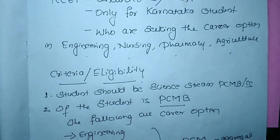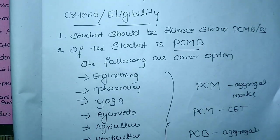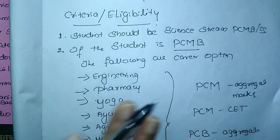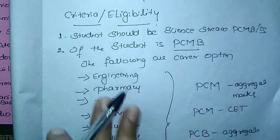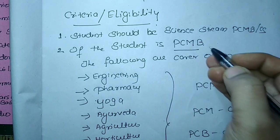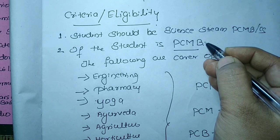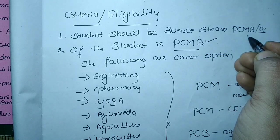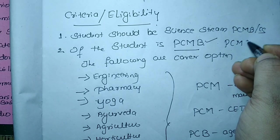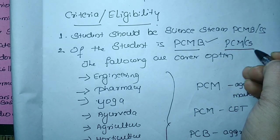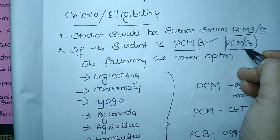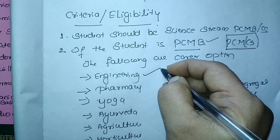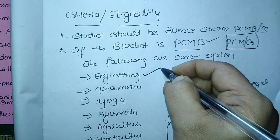So then what are the condition or the criteria or the eligibility for this exam is that one common condition is that it should be a science student. You should complete the first and second PU under science stream either PCMB or PCMC. So here again the options will change. Most of the students will take PCMB and some students will opt PCMC. Those who have taken PCMC they are eligible only for the engineering courses.